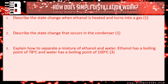Okay, let's go through the answers. Question one — describe the state change when ethanol is heated and turns into a gas. Hopefully you remembered that's evaporating or boiling; either of those gets you the mark. Number two — describe the state change that occurs in the condenser. That's turning from a gas back into a liquid — that's condensing.